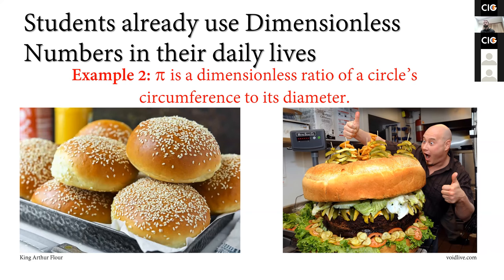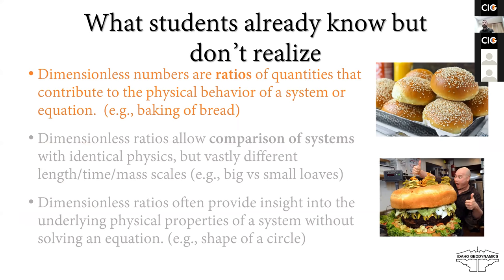Taking all this information about ratios they use in their everyday lives, including pi and the cooking ratio, we can break it down into things the students know about dimensional numbers already but haven't framed in the way we would in geodynamics. They know that non-dimensional numbers are ratios of quantities that contribute to the physical behavior of a system or equation. They also know that dimensionless ratios allow comparisons of systems with identical physics but at vastly different length, time, or mass scale — like comparing a small hamburger bun to the biggest hamburger bun ever. If those two bake in the same way, they have the same physics, and so that ratio tells us the physics of those two situations are the same.